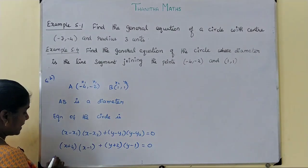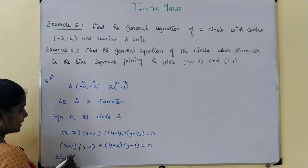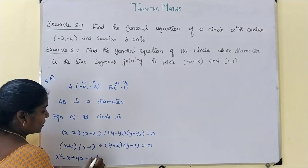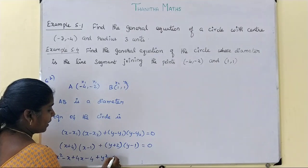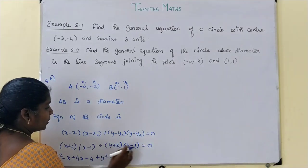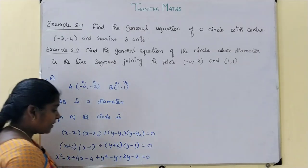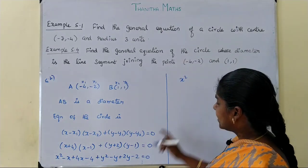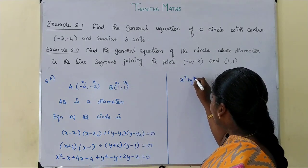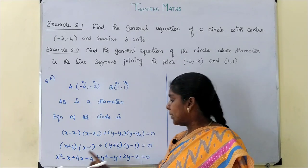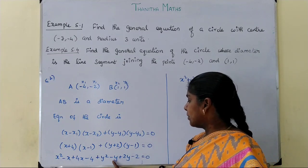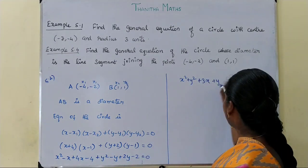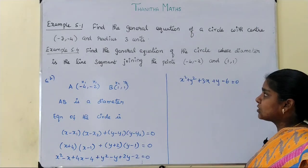Expanding: x into x is x square, x into minus 1 is minus x, 4 into x is 4x, 4 into minus 1 is minus 4. Similarly for y terms: y squared, minus y, plus 2y, minus 2, equal to 0. This is the required equation of the circle.